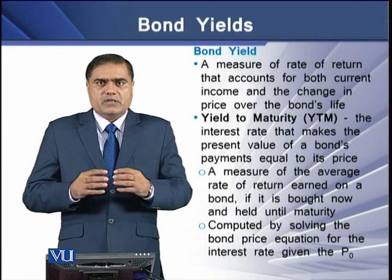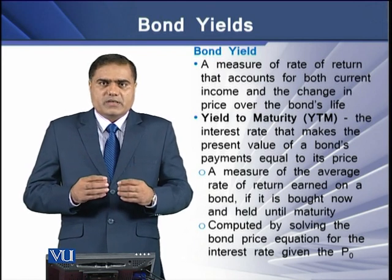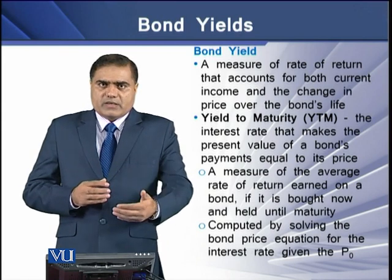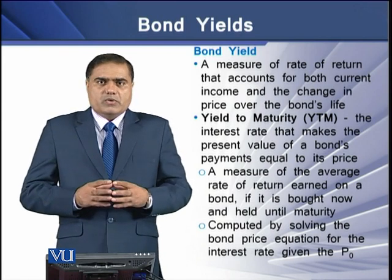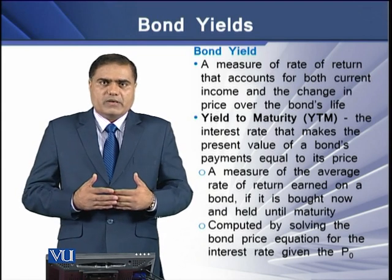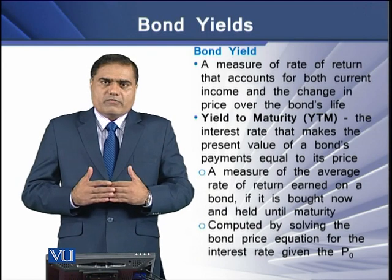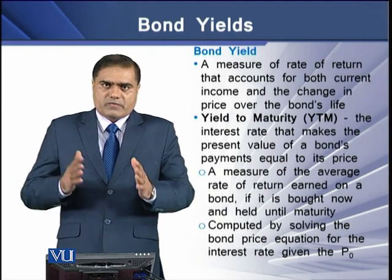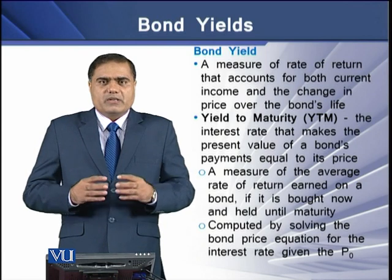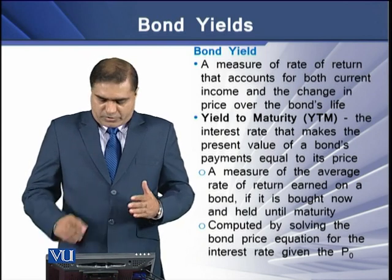In the bond valuation formula there is a discount rate denoted as R. If we have all the values in the equation except R, while solving the equation with the given values we can determine R, and that R is then termed as the yield to maturity.